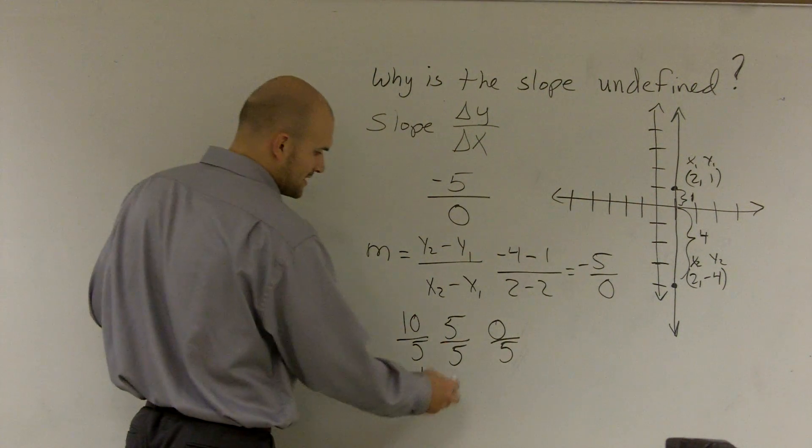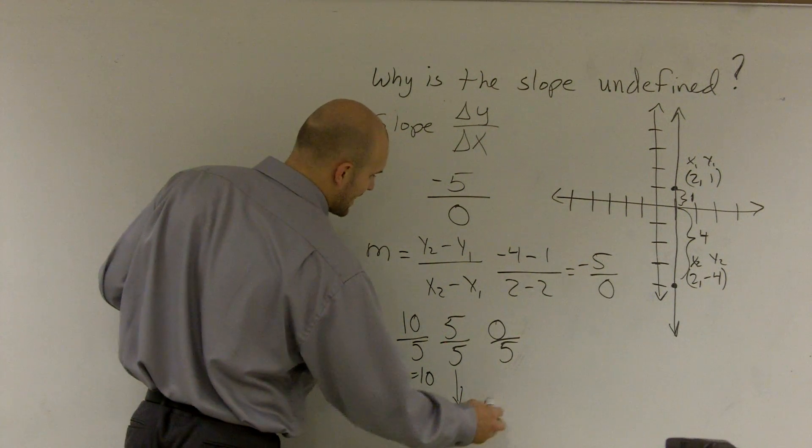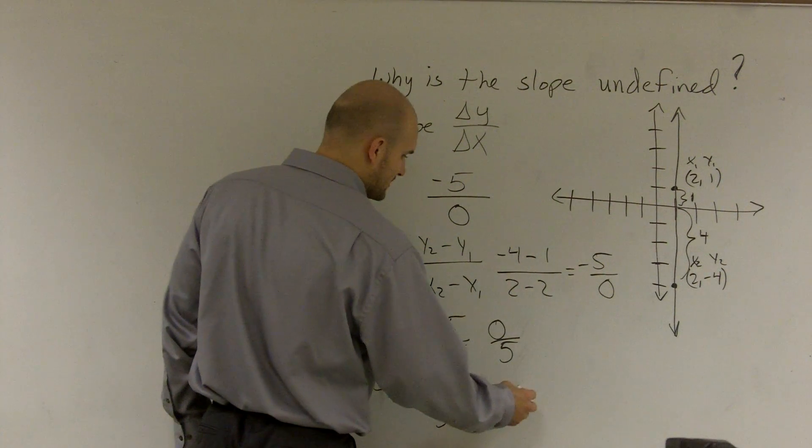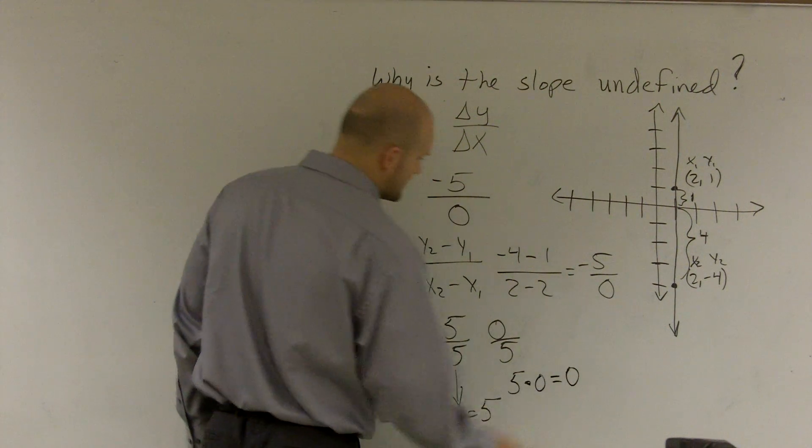We can rewrite this one as a multiplication problem. 5 times 1 equals 5. We can even rewrite this one as a multiplication problem. This one is 5 times 0 equals 0.